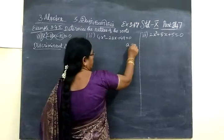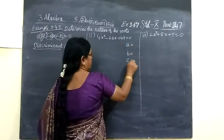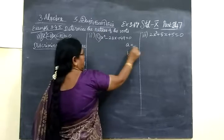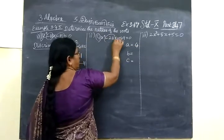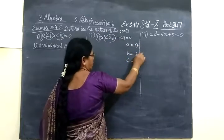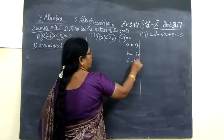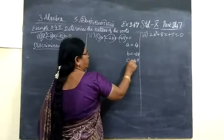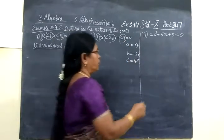For this term, A, B, C. So here the coefficient of x squared is 1. Coefficient of x is minus 11. Constant is minus 10. For this term, A is 4, and B is minus 28. Then C is 49.